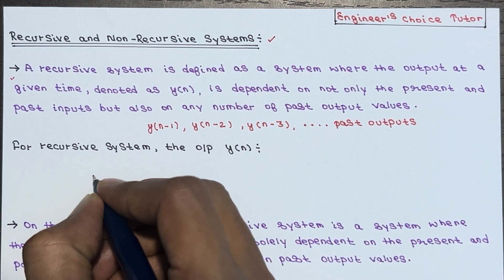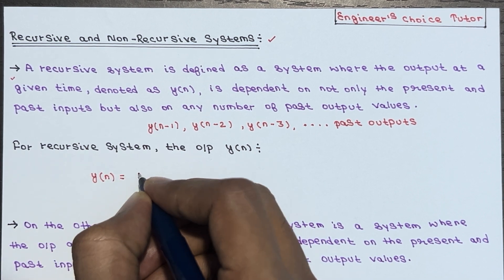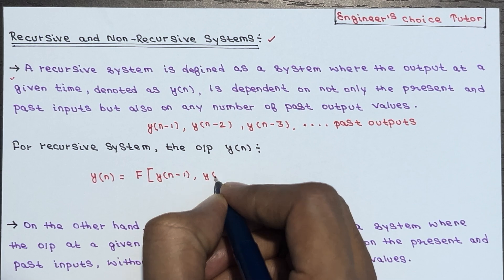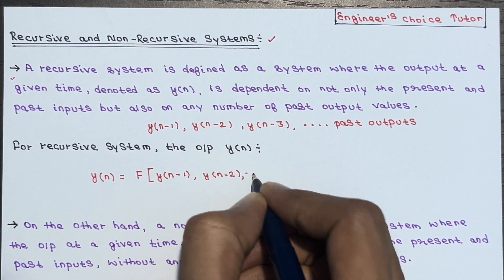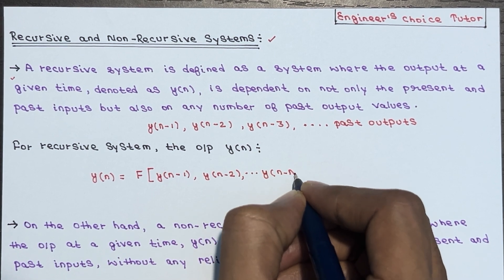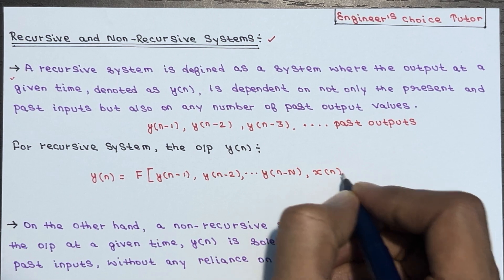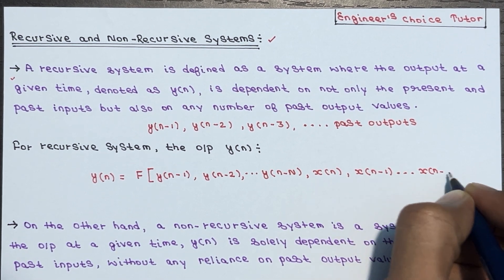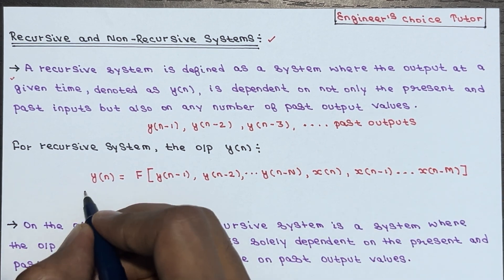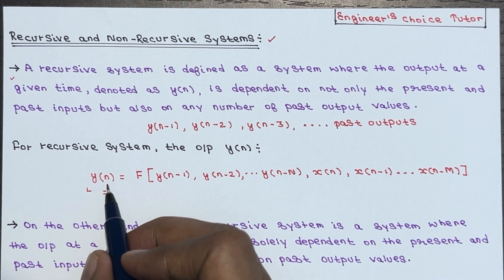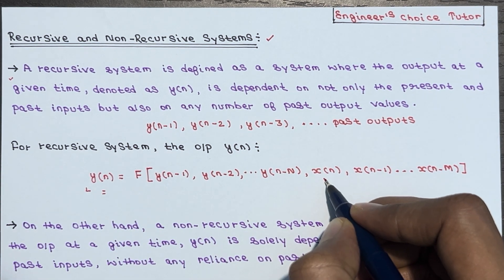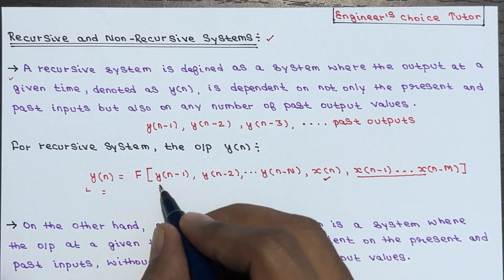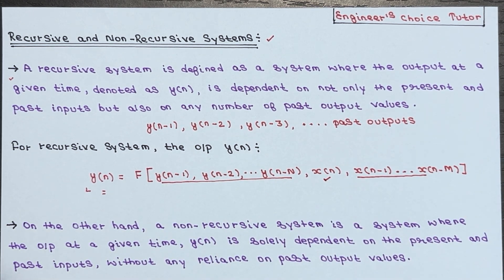So for a recursive system, y of n is a function of y of n minus 1, y of n minus 2, up to y of n minus capital N, and x of n, x of n minus 1, going till x of n minus m. From this you can conclude that the output y of n depends upon the present input, past inputs, and past output values.